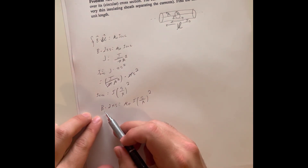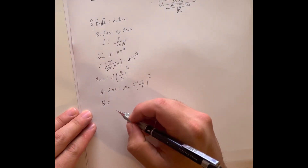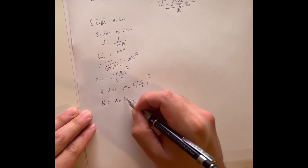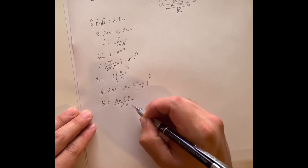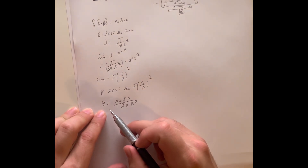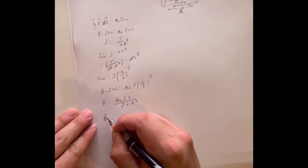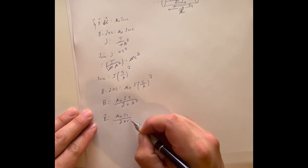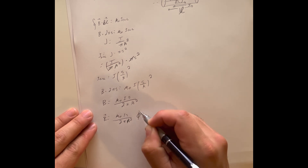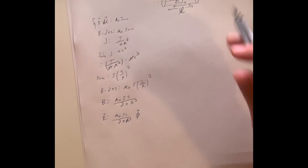Solving for the magnetic field, we get B = μ₀ I s / (2π R²). Since we just have the magnitude, we also need the direction, which will be in the φ̂ direction.